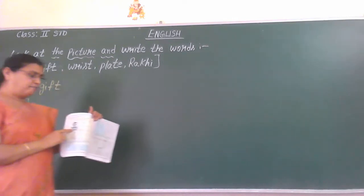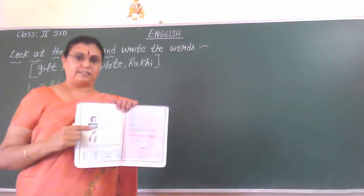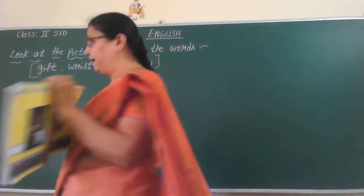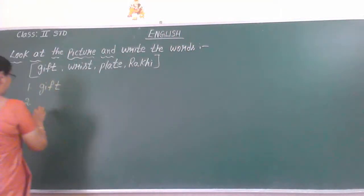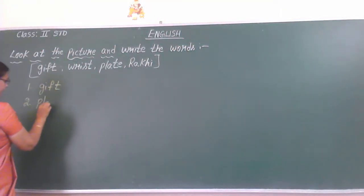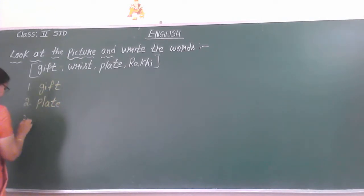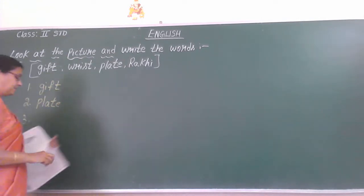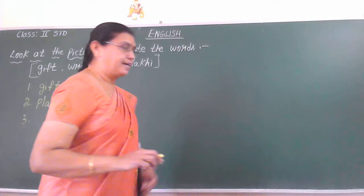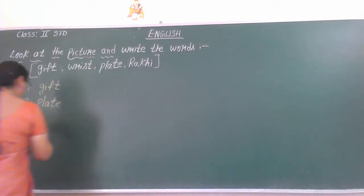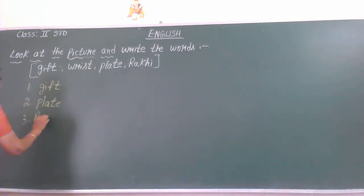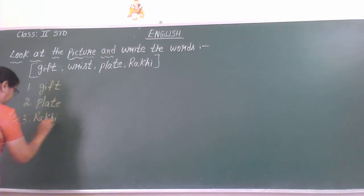Second picture — what is there? Very good, it is play. What is the spelling of play? P-L-A-Y. Next, the third picture: Rakhi. By seeing the picture you have to write this spelling: R-A-K-H-I.